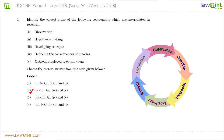For question number six we have been given five steps of a typical research process and asked to put them in the correct order. Observation is always going to be the first step in any research process — it is only after you observe that you identify the problem, then develop a hypothesis, design experiments to test it, and the rest follows. Any answer choice which does not have observation as the first step is wrong, so we eliminate one, three and four, leaving option two as the correct answer.